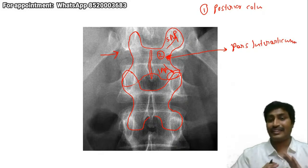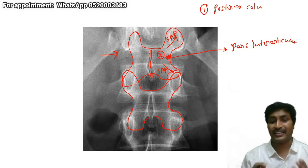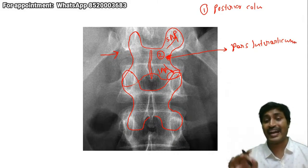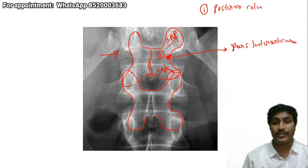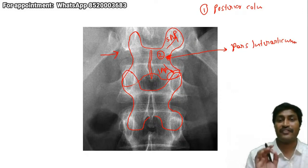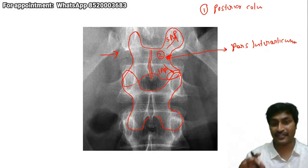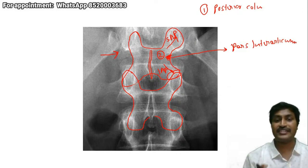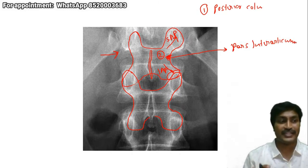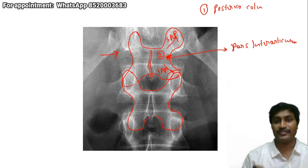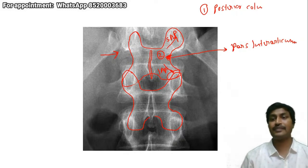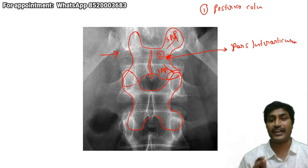In the posterior column, as I have told you, we have the spinous process — this is the midline of the butterfly. This portion is known as the lamina. This is the superior articular process, this is the inferior articular process. This junction between superior and inferior is known as the pars interarticularis. Like Arjun in the Mahabharata could identify only the eye of the bird, when you are looking for the posterior elements you have to identify this butterfly.